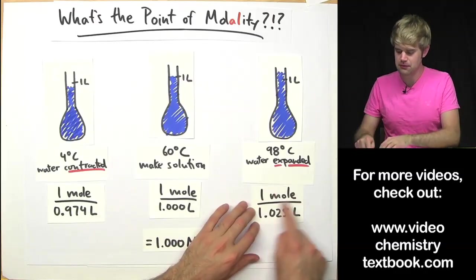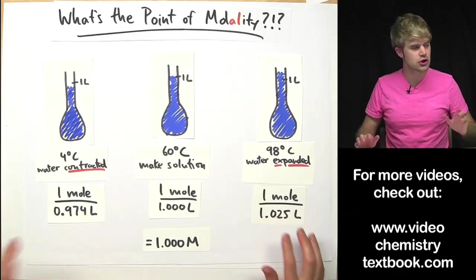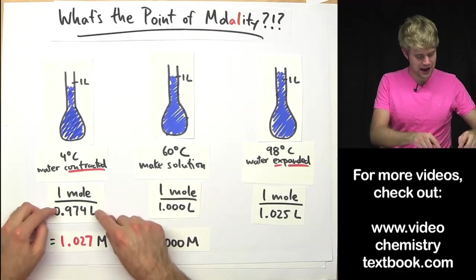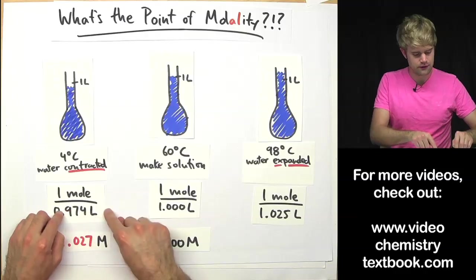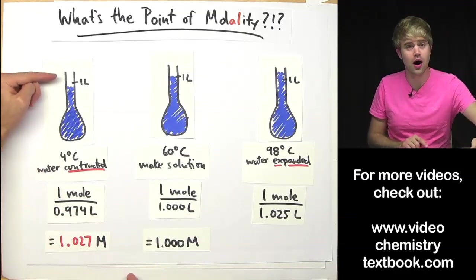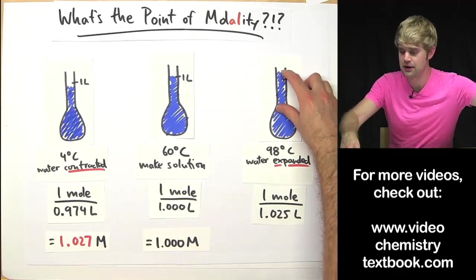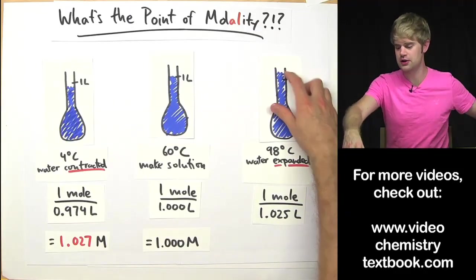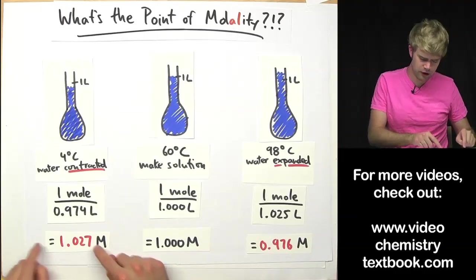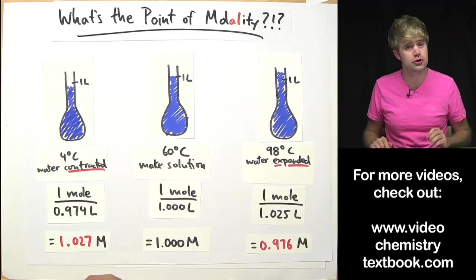Since we get molarity by taking the moles and dividing the liters, this is going to change the molarity. So now in this situation, because I have less volume so I'm dividing by a smaller number, my molarity is actually going to go up because the water contracted. And because the solution expanded here, I get a smaller molarity. Now you could say that these aren't huge differences and they might not be depending on what you're doing.